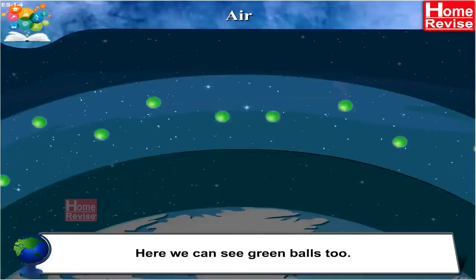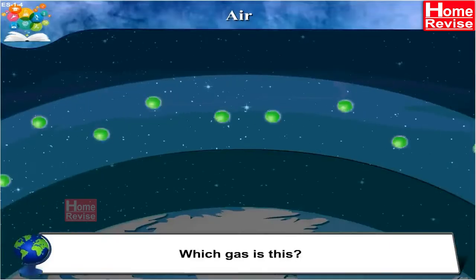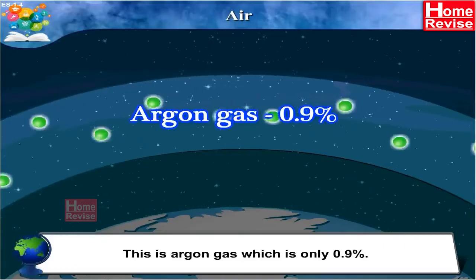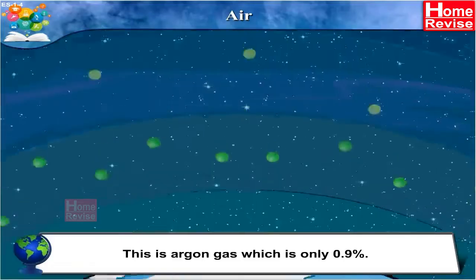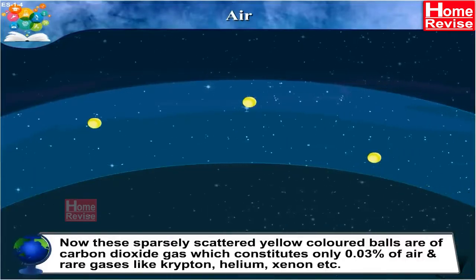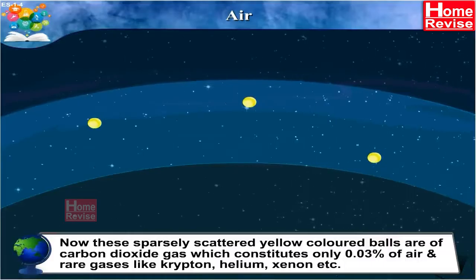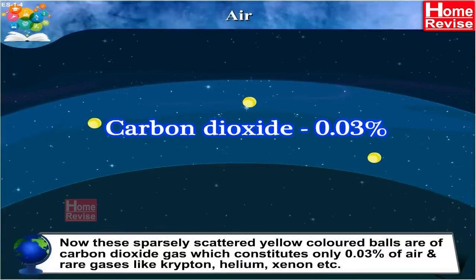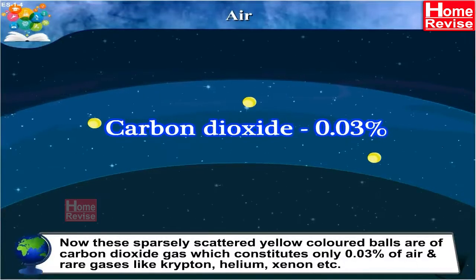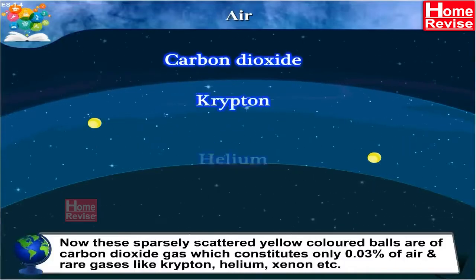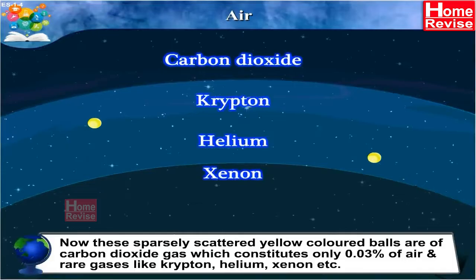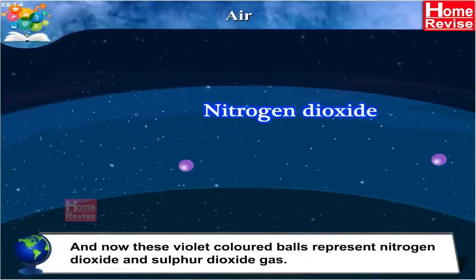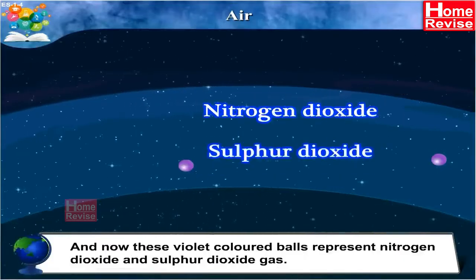We can also see green balls. This is argon gas, which is only 0.9%. The sparsely scattered yellow coloured balls are carbon dioxide gas, which constitutes only 0.03% of air, along with rare gases like krypton, helium, xenon, etc. The violet coloured balls represent nitrogen dioxide and sulphur dioxide gas.